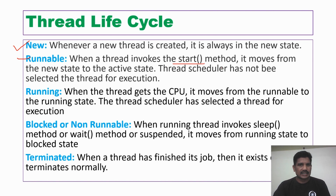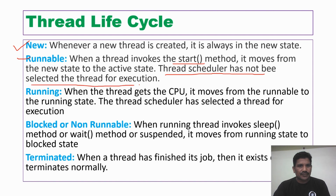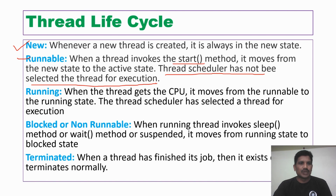But it is not yet in the running state — the thread scheduler has not selected the thread for execution. It is ready for execution, but it has not been executed yet. That is called the runnable state.